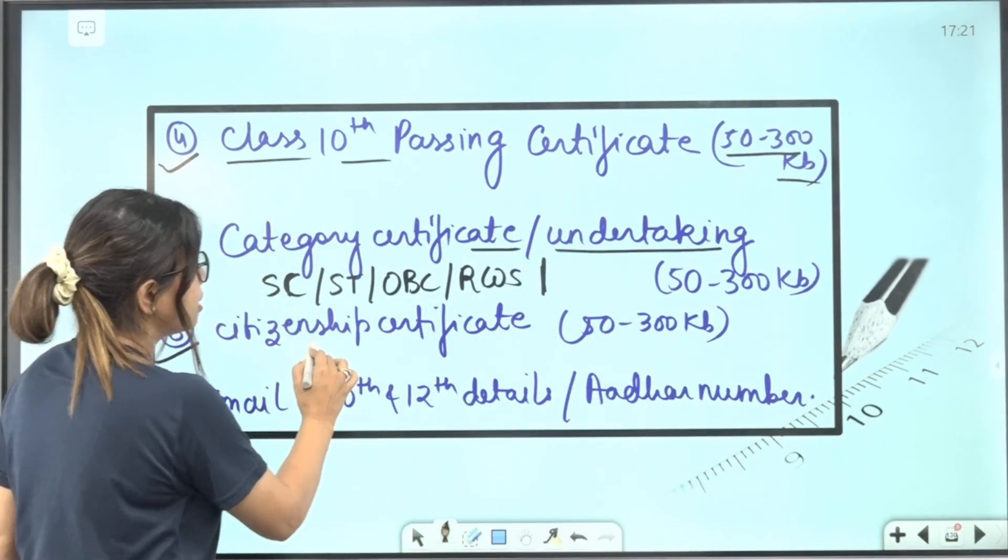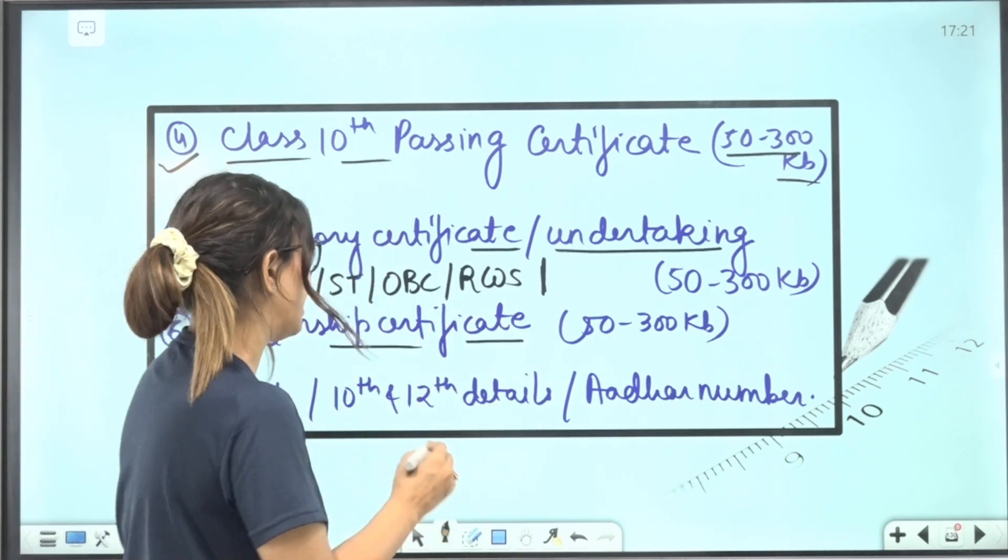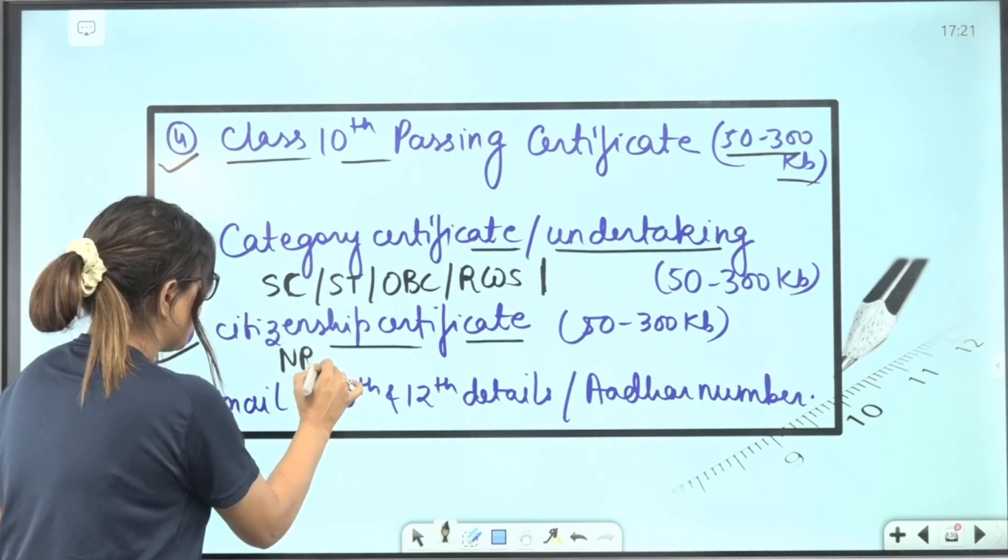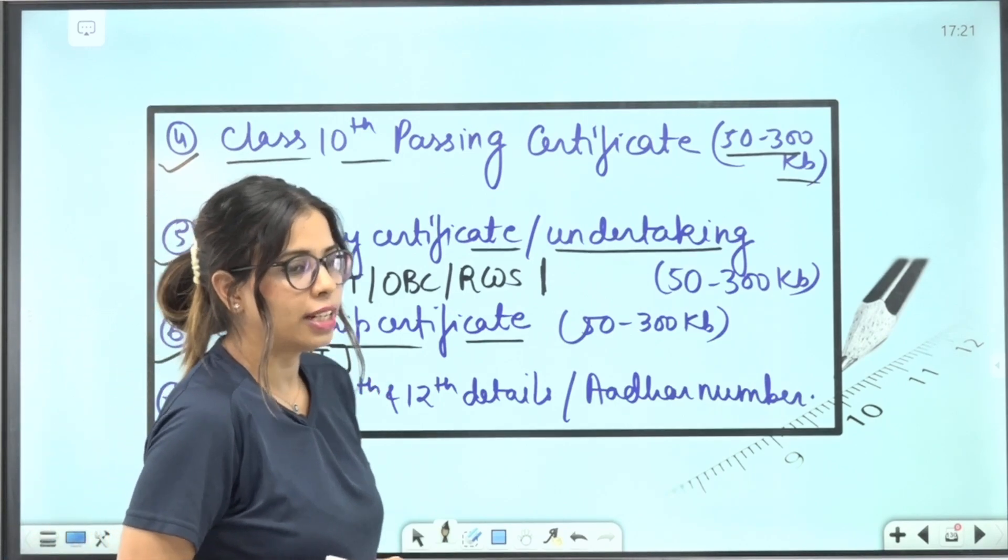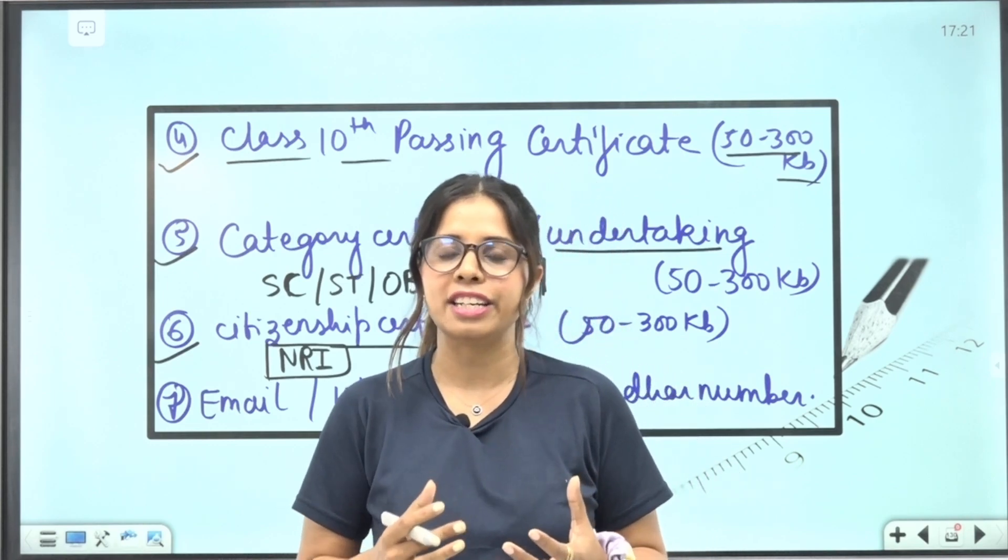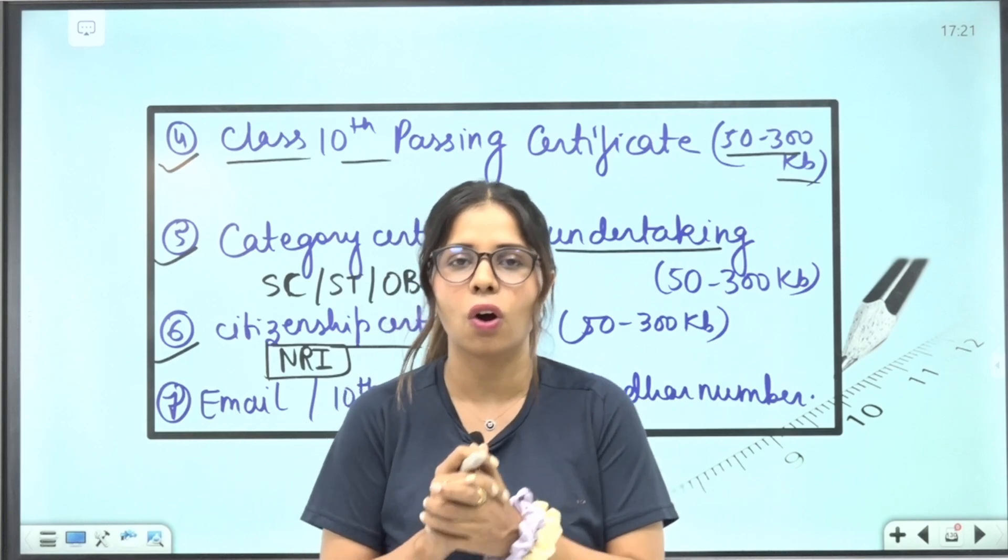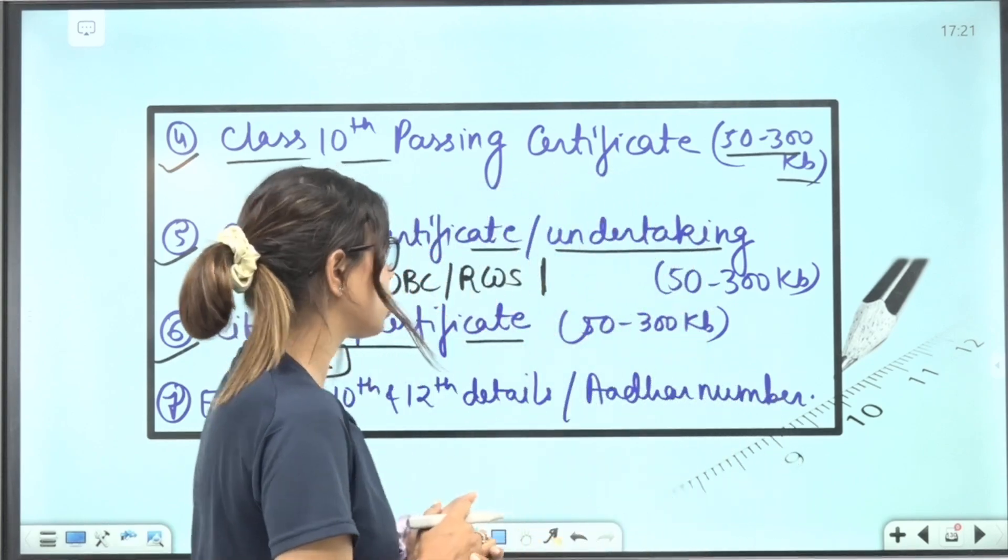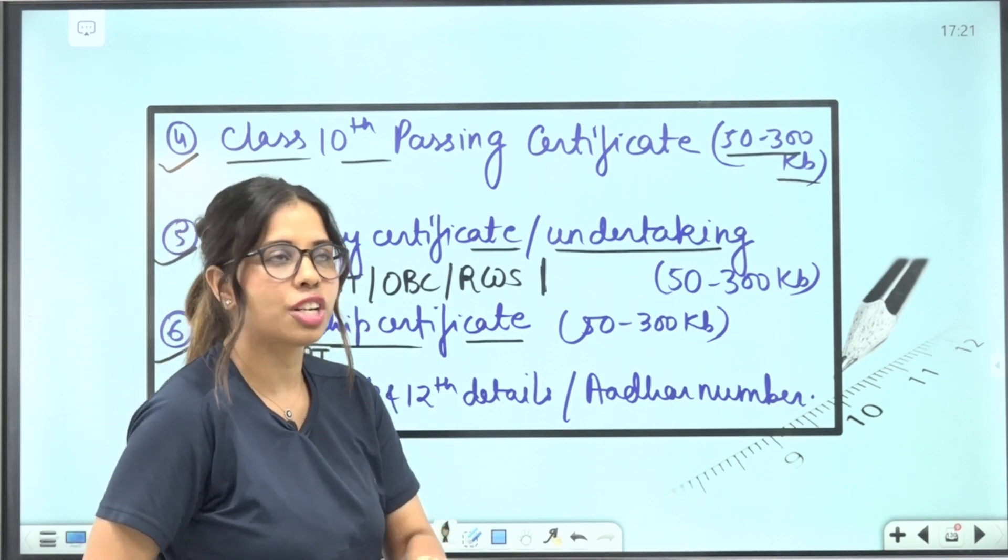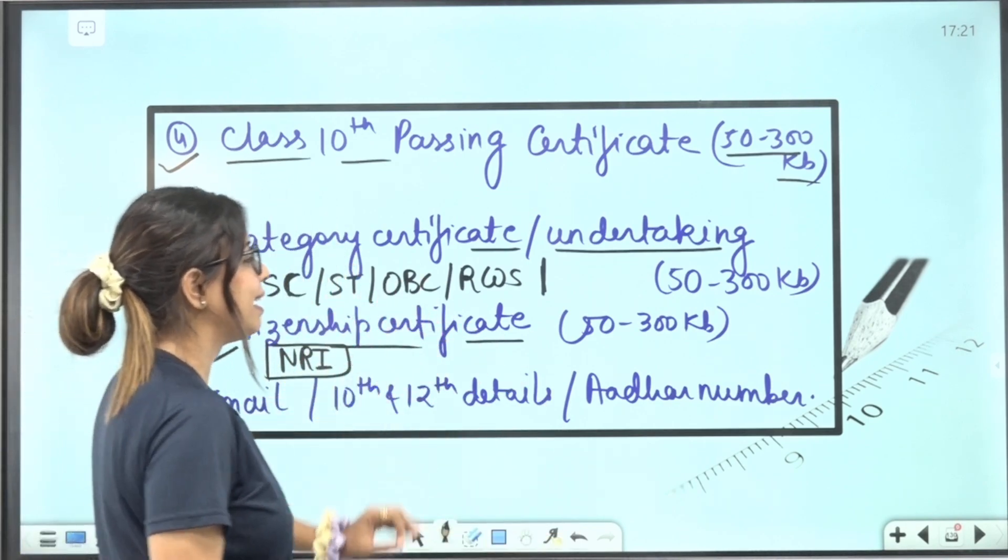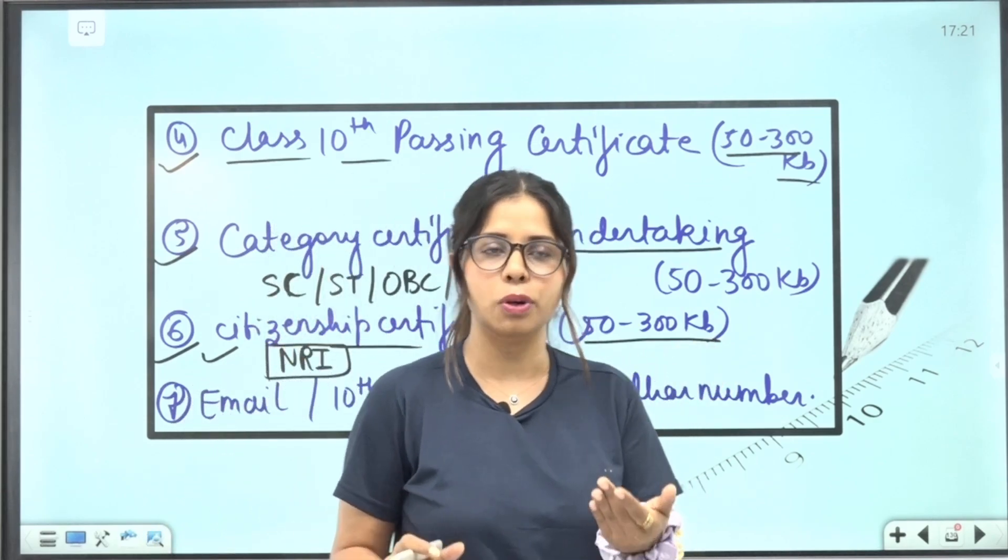And next is citizenship certificate. So if there is a child with NRI status, because I have received many children which are NRI, especially during the COVID condition and after that, many children come back to India. These children who are NRI, that citizenship certificate ready, 50 to 300 KB, you need to upload it.